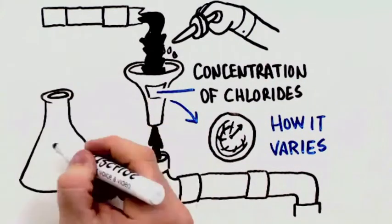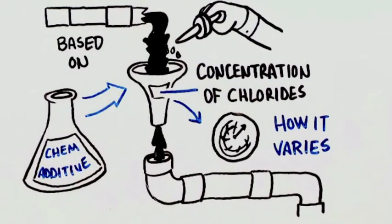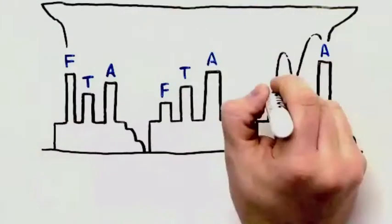Control measures such as chemical additive addition are often based on the chloride concentration at any point in time. Frequency, timeliness, and accuracy of this data varies by refineries.